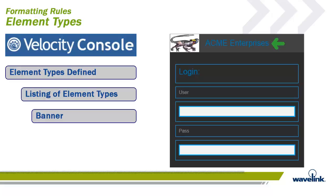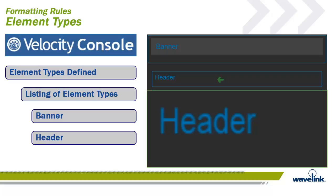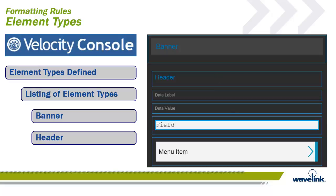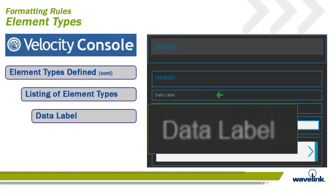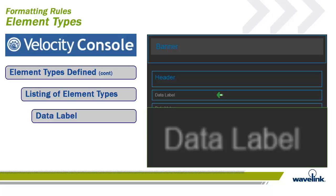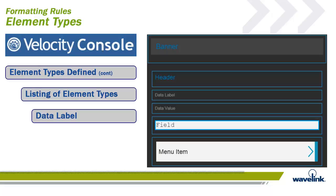Think of a header element as a title of the screen that is being displayed. This is the way the user is able to determine just what the screen is looking for. The data label element is a dynamic subheader text that is used to label fields. This element allows you to change the label for the Velocity HTML rendered screen, but will not alter the black and green version of this label.